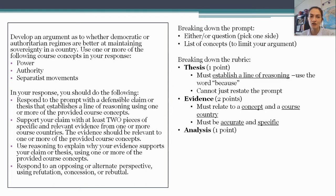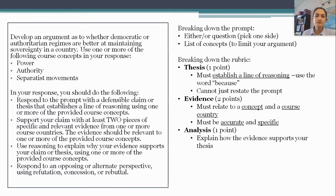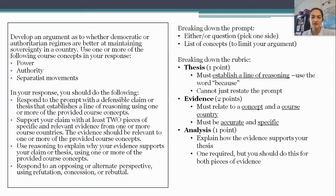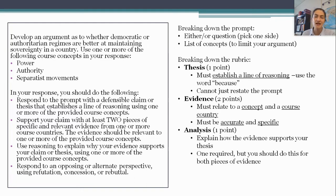Number three is analysis or reasoning — you can call it whatever you want. You have to explain why that evidence supports your claim or thesis. You have to do this for at least one piece of evidence, but I really recommend doing it for both. If you only analyze one piece of evidence, the other is just a random fun fact with no apparent reason. From a score-maximizing perspective, doing this twice gives you a second chance at earning that point in case your reader doesn't like the first thing you wrote. Explicitly connect that evidence back to the thesis. You cannot earn this analysis point without earning the thesis point, so nail down a clear argument and line of reasoning in those first couple of sentences of your essay.